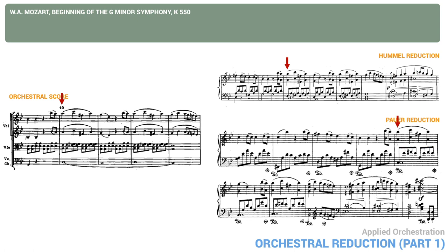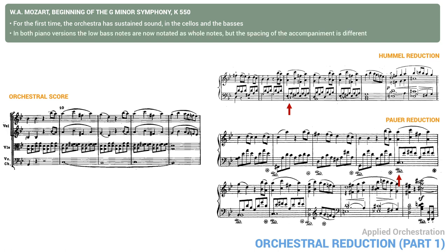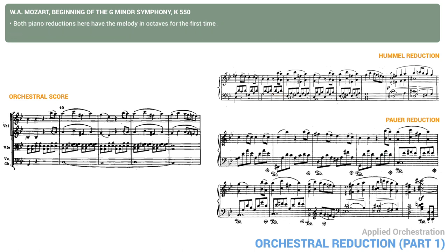Now look at measure 10. Here, for the first time, the orchestra has sustained sound in the cellos and basses. On the piano, this will translate into using the pedal more generously. In both piano versions, the low bass notes are now notated as whole notes, but the spacing of the accompaniment is different. The Hummel version transposes it lower, making it easier to sustain the left-hand low notes. It's higher in the Power version, in the same register as the original. Another interesting point is that both piano reductions here have the melody in octaves for the first time. Since the articulation is now smoother and more legato, the sound is fuller, so playing the right hand in octaves helps to achieve that on the piano.